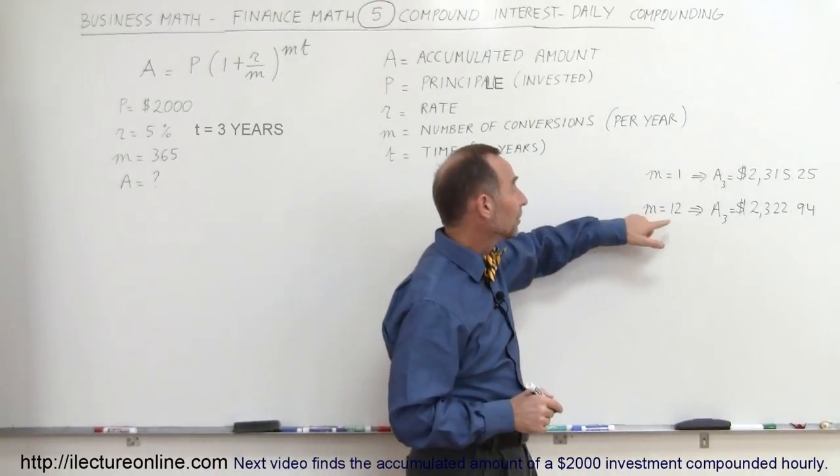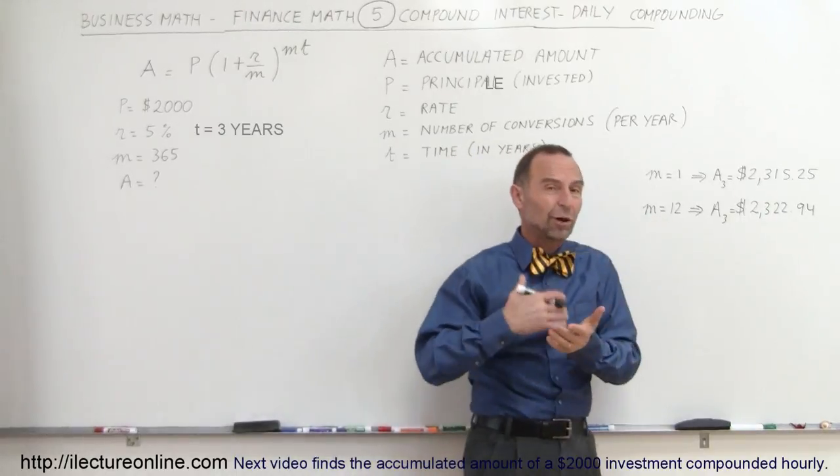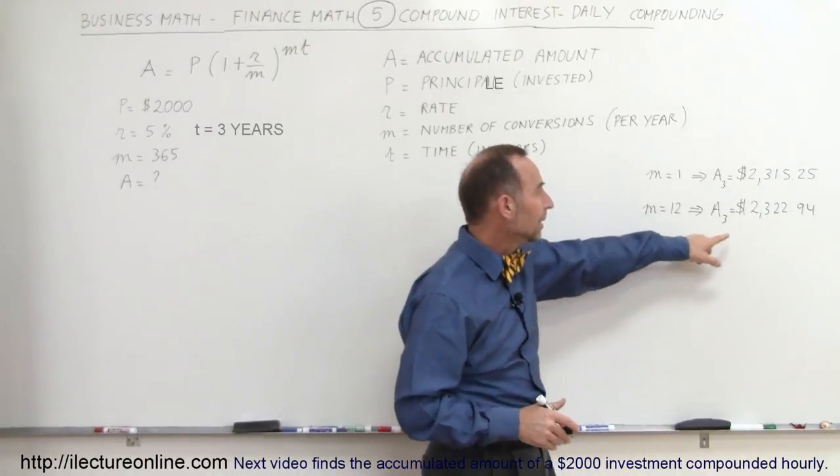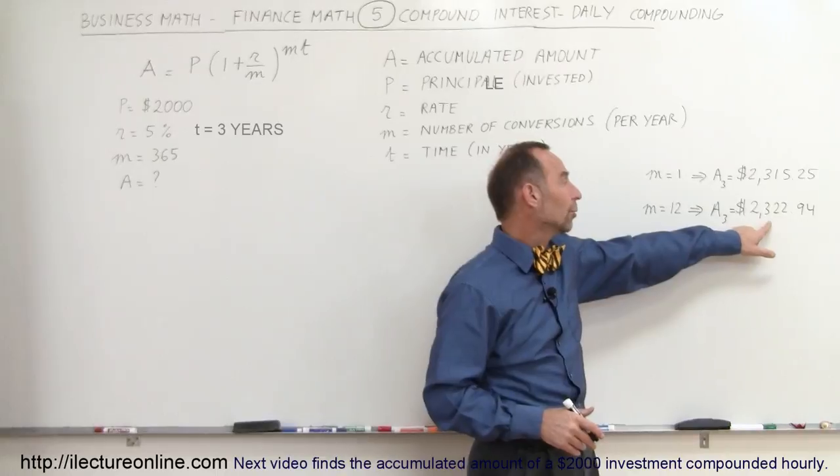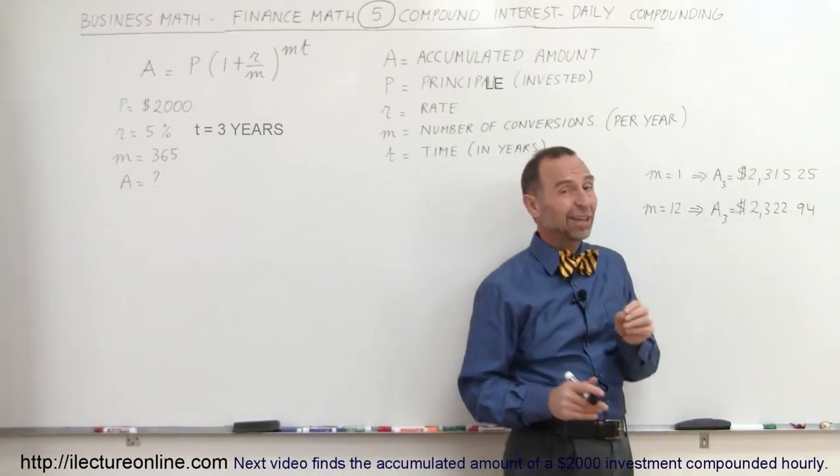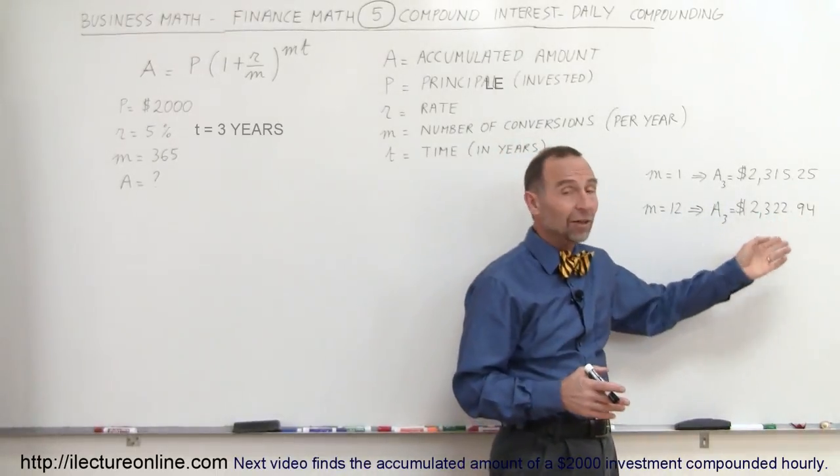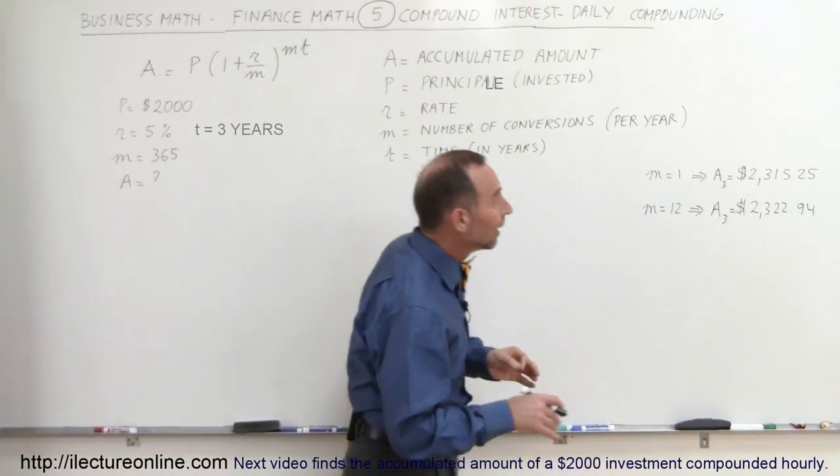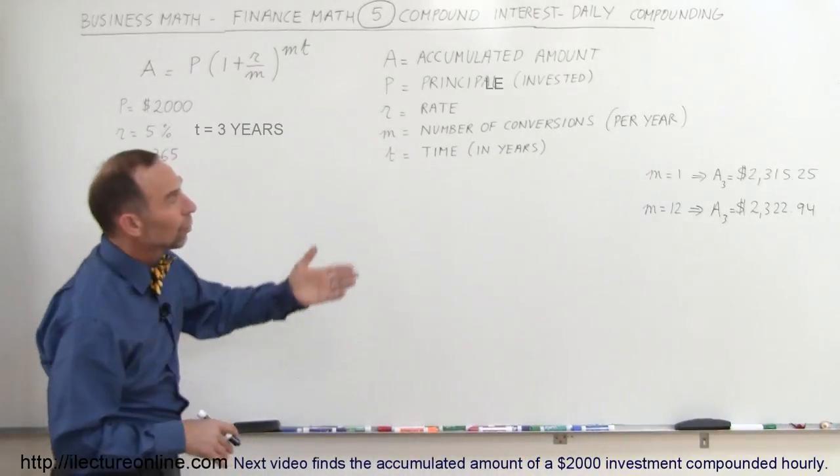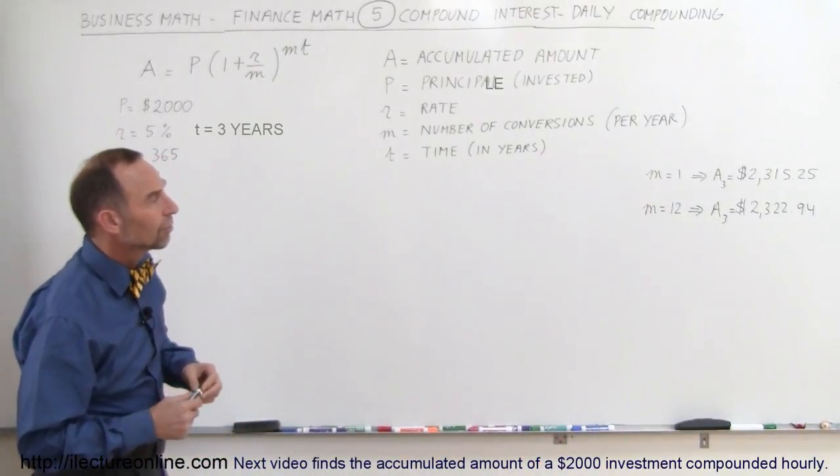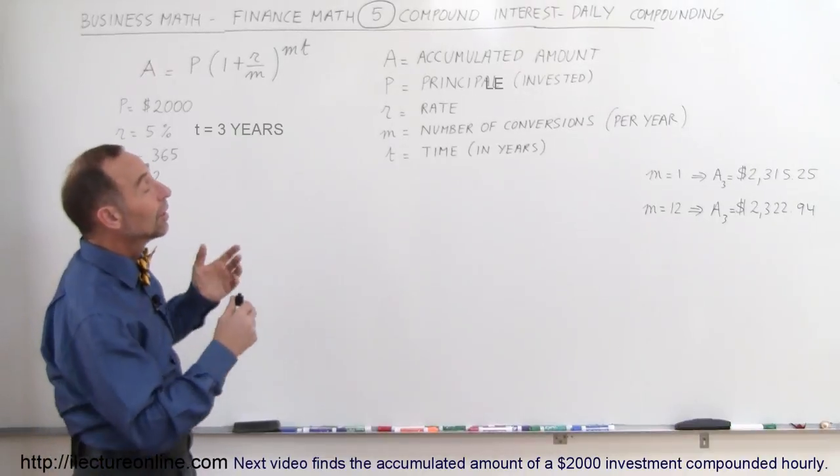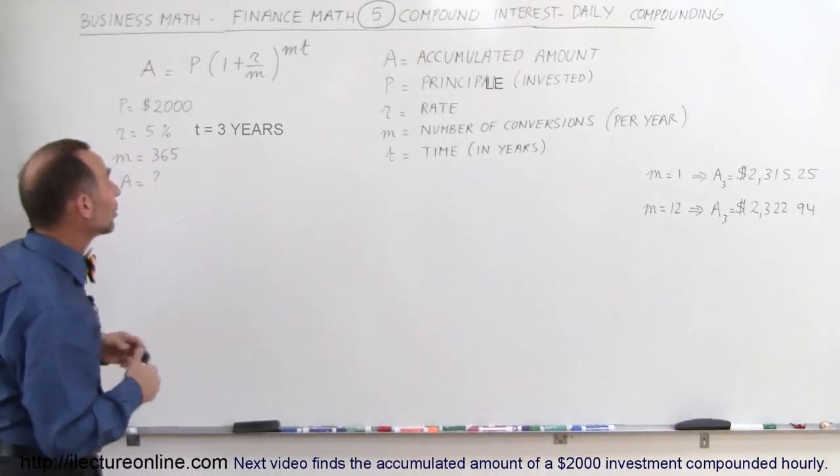And if we compound monthly, m equals 12, meaning 12 conversions per year, then the amount accumulated would be $2,322.94, which means you make about $7.75 more when you compound monthly.